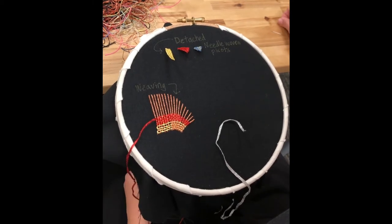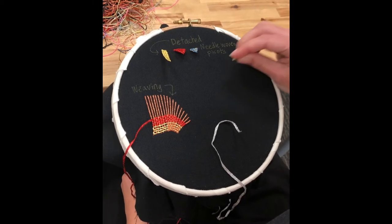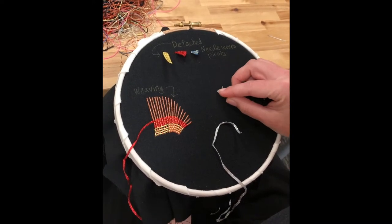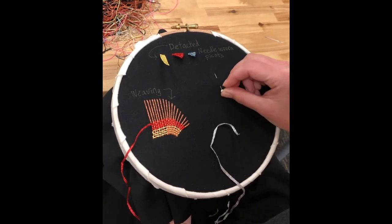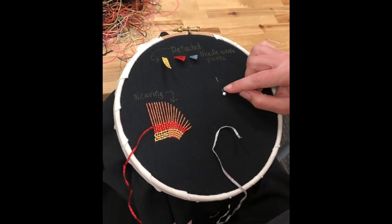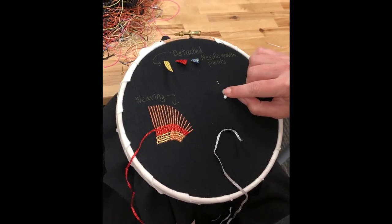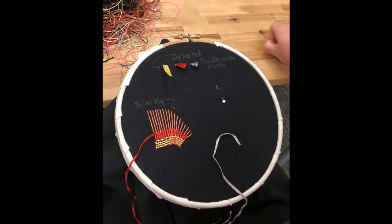So first I'm going to show you how to make a detached needlewoven picot. So for this you need a pin, and what I'm going to do is just place my pin in the fabric like that, and wherever you bring the pin up here that's going to kind of determine the length of your picot, which you'll see in just a moment.